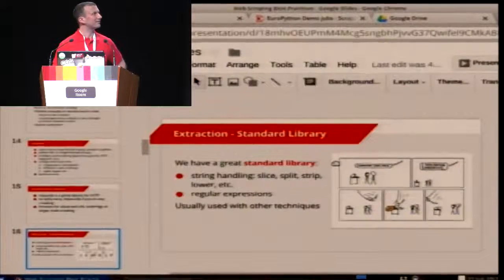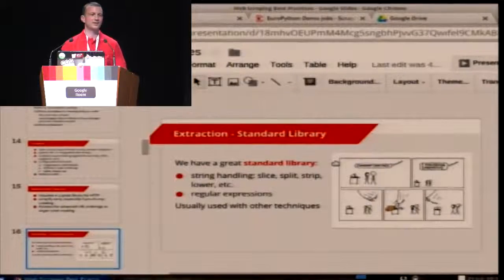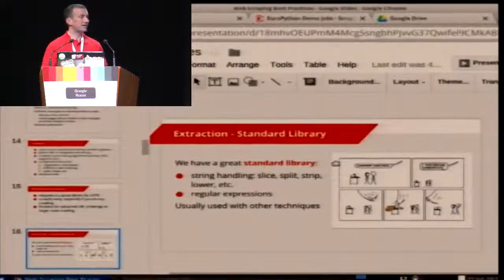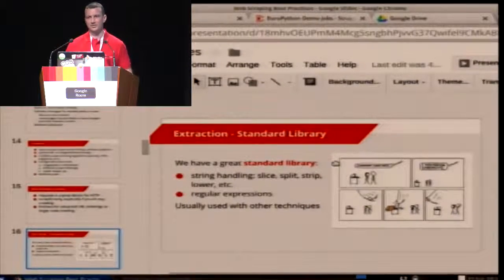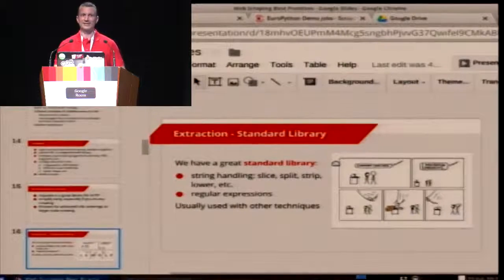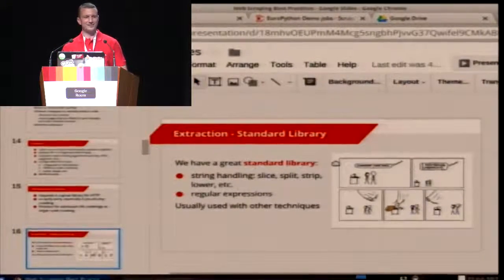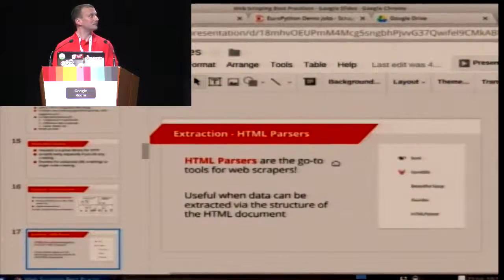To summarize downloading: requests is an awesome library for simple cases, but once you start crawling it's better to move to Scrapy quickly — you might not even want to start with requests. If you need something really complicated at scale, consider Frontera. Moving on to extraction: Python is a great language for extracting content. Regular expressions are brilliant for textual content — they work great with things like telephone numbers or postcodes. But if you find yourself matching against HTML tags or HTML content, you've probably made a mistake and there's a better way.